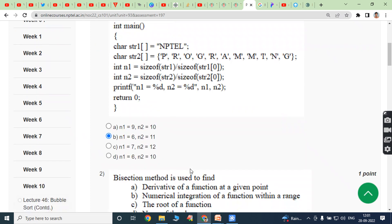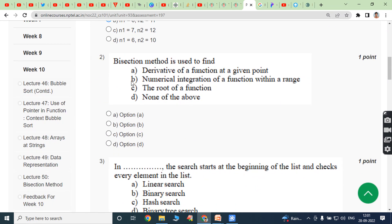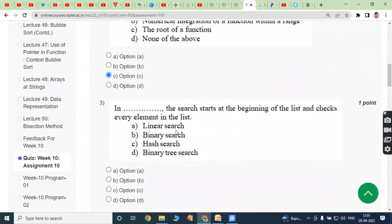Next, second bit: Bisection method is used to find... So bisection method is generally used to find the roots of a function. So that answer is option C.